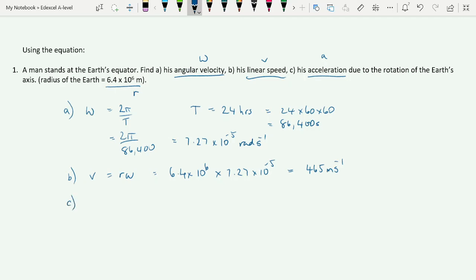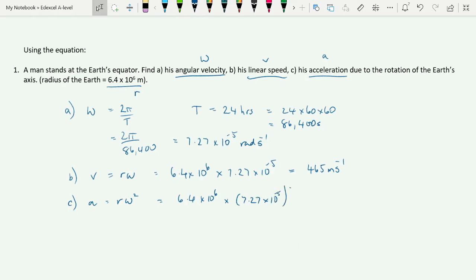And finally, part C, our acceleration here. We've got a number of equations we can use. We've got R omega squared, or we've got V squared over R. I'm going to go for R omega squared here, because this is the numbers that we have most readily. Again, 6.4 times 10 to the 6, multiplied by our 7.27 times 10 to the minus 5 squared. And that gives us 0.034 meters per second squared.